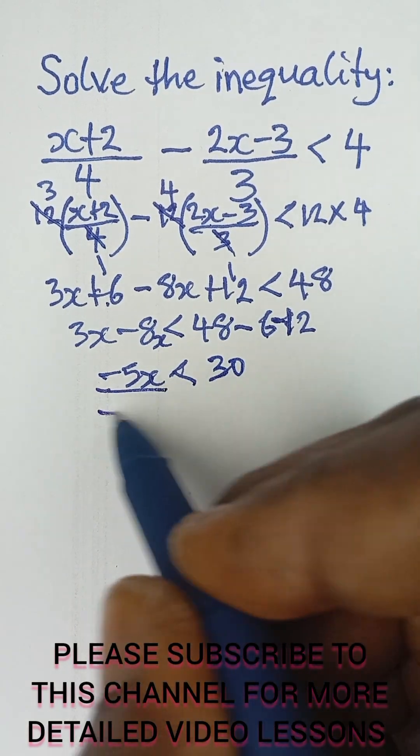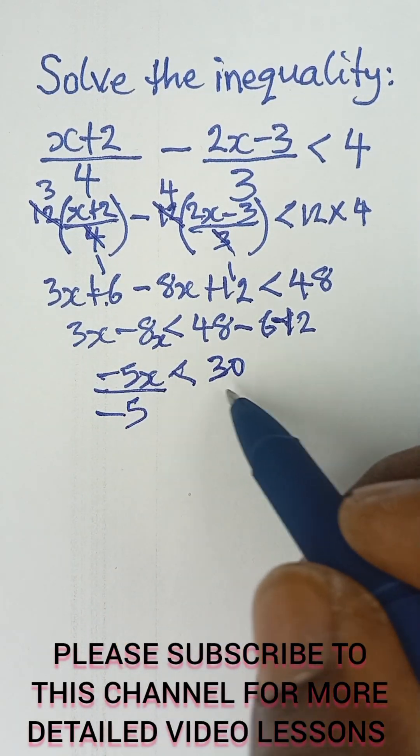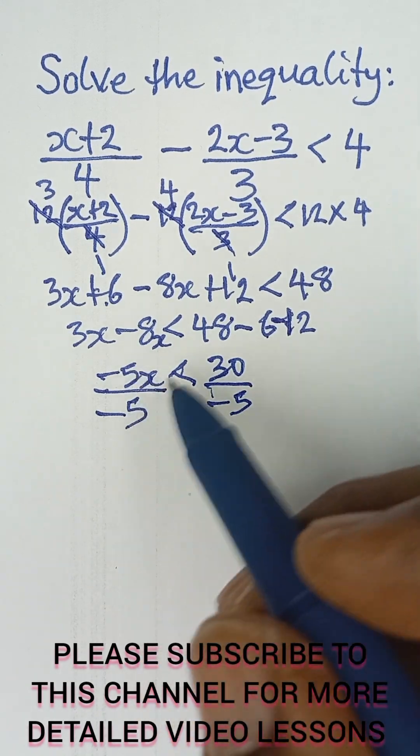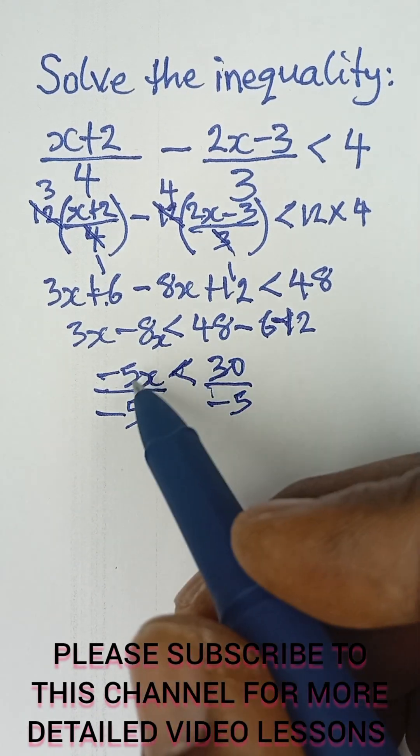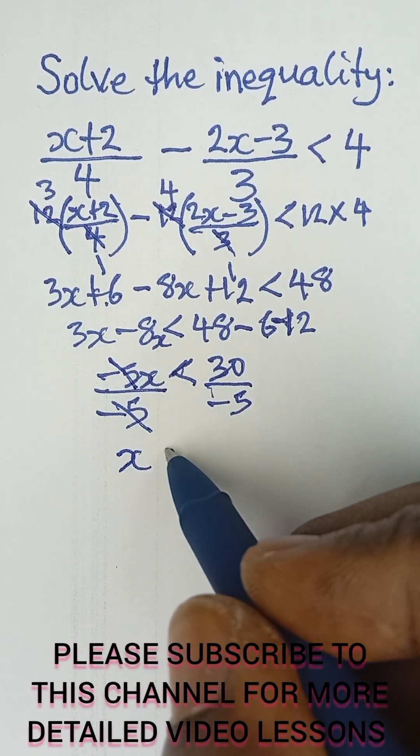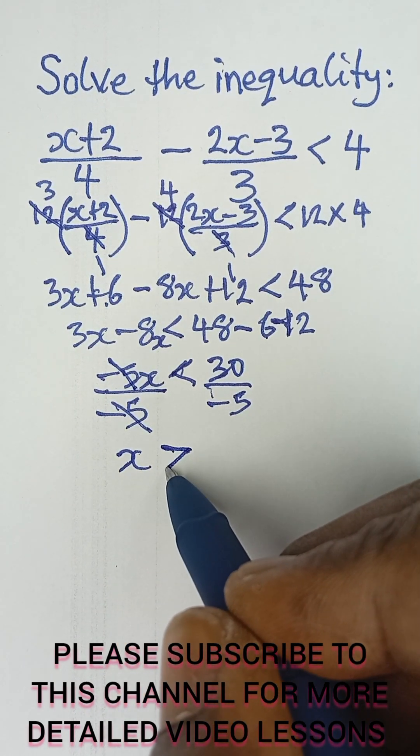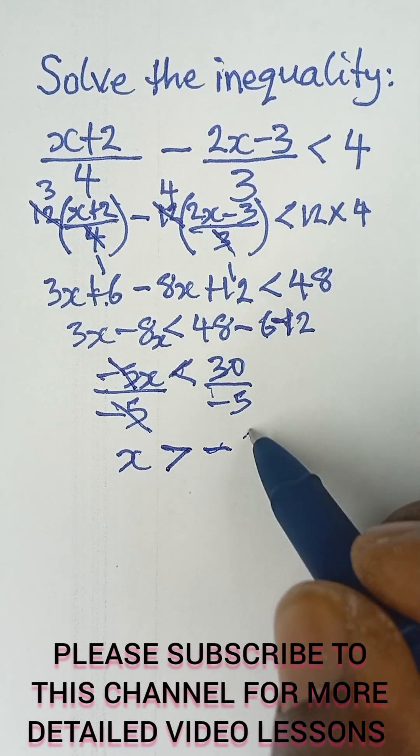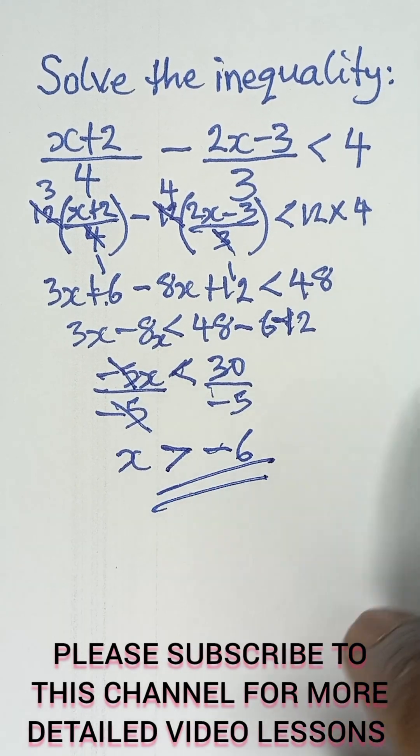So the next thing is to divide both sides by -5 and also divide this by -5. Anytime you divide an inequality by a negative number you reverse the inequality sign. So this becomes x and then we reverse the sign because we are dividing both sides by a negative number. 30 divided by -5 will give me -6 and this is the final answer.